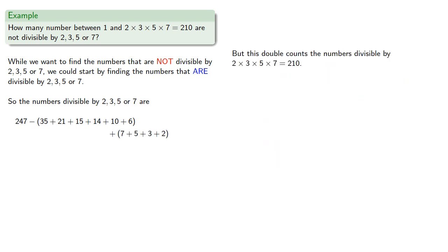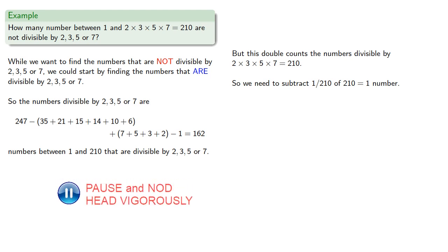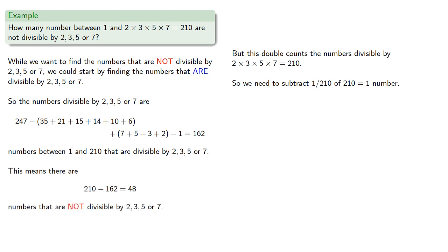And this double counts the numbers divisible by 4 of our numbers, so we need to subtract. And that gives us 162 numbers between 1 and 210 that are divisible by 2, 3, 5, or 7. And this means there are 48 numbers that are not divisible by 2, 3, 5, or 7.